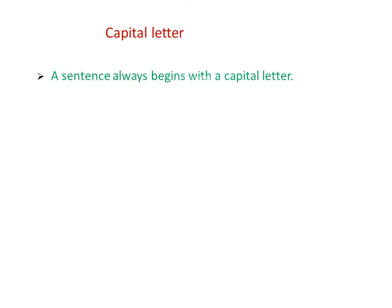The first rule is that a sentence always begins with a capital letter. So let us write all these sentences with a capital letter. Rohan is my best friend — we write R capital. She is my neighbor — we write S capital.